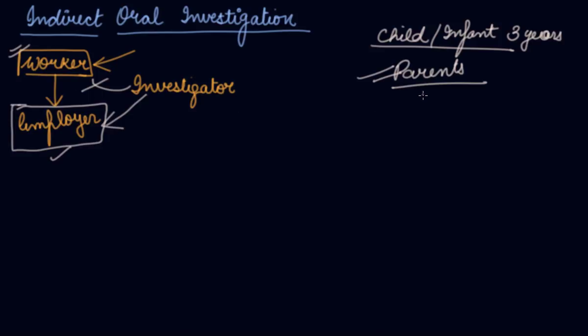These other persons are also known as witnesses. These are the examples of indirect oral investigation. Now let's understand where it is suitable.